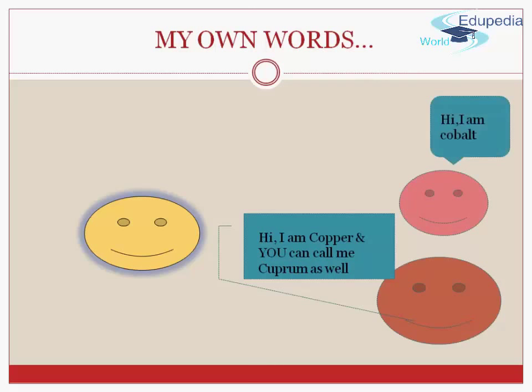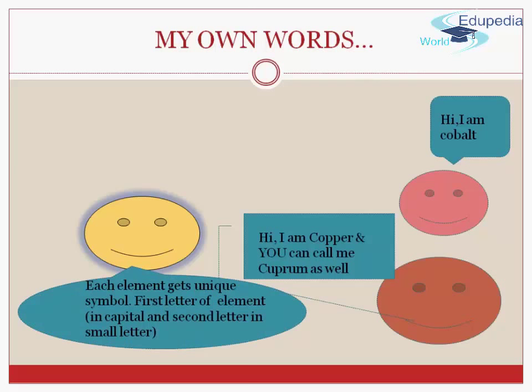Hey friends, can you tell me what will be my symbol as Carbon also starts with C, Copper also starts with C, and me too with C as Cobalt? Friends, I will let you know how we can get our symbols as each element gets a unique symbol. First letter of the element is in capital and the second letter in small letter.